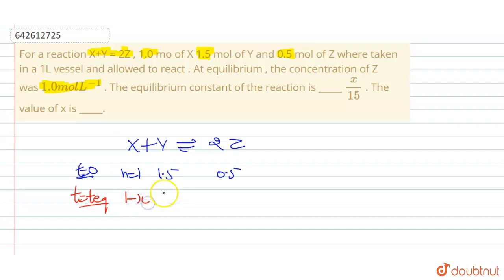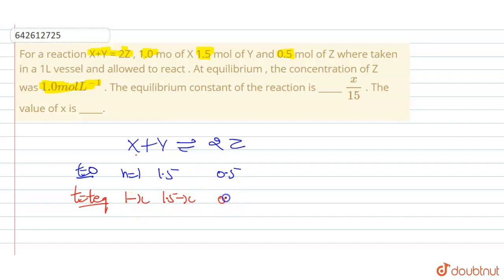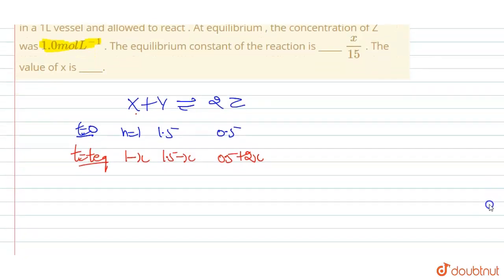At equilibrium, let's suppose x moles of x dissociate. So moles of x remaining at equilibrium is 1 minus x. Since one mole of x reacts with one mole of y, moles of y left equals 1.5 minus x. For moles of z: one mole of x forms two moles of z, so x moles form 2x, and initially we had 0.5 moles.